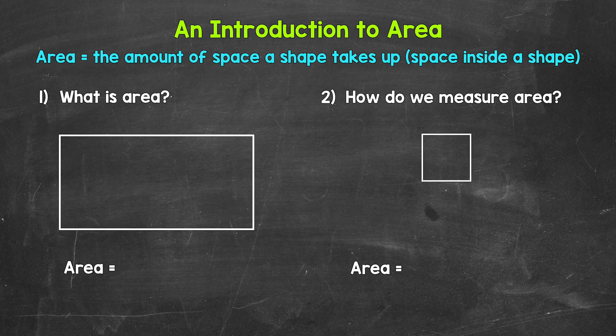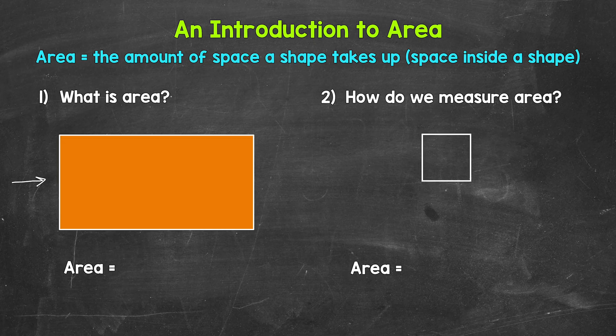We can also think of area as the amount of space inside a shape. So looking at number one, we have a rectangle right here. The area of this rectangle is the amount of space it takes up — the amount of space inside of the rectangle. I'm going to make this space orange to help us visualize the space we need to measure to find the rectangle's area. So looking at the orange, that's the amount of space that the rectangle takes up. But how do we measure that? How do we figure out how much space that is? Let's move on to number two.